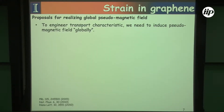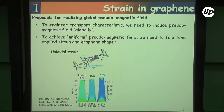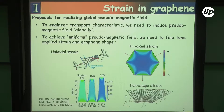We wanted to try something where we can engineer things globally — having a uniform pseudo-magnetic field all the way across the graphene sample. We can try uniaxial strain, which can add a pseudo-magnetic field, but this is a little unrealistic experimentally. We could try triaxial strain, but that's also difficult to apply in a way that gives us the required strain pattern. Or we can use a fan-shaped pattern, but again, it's very difficult to implement.